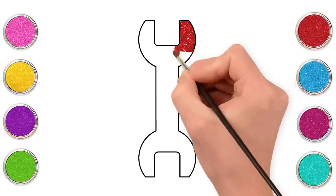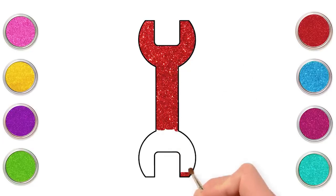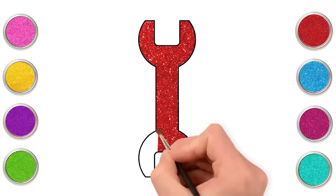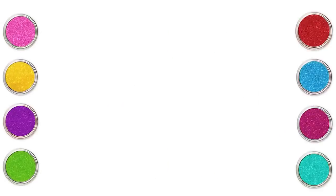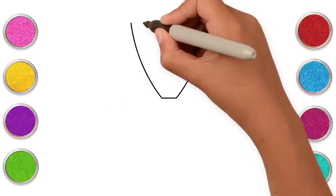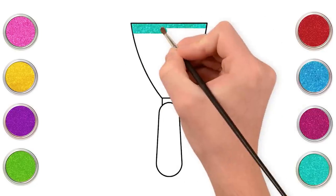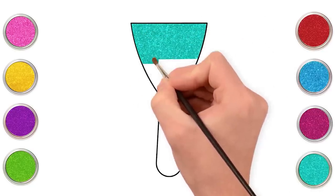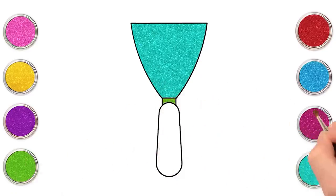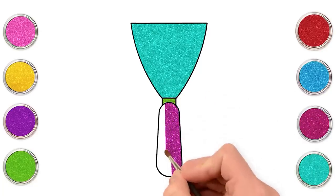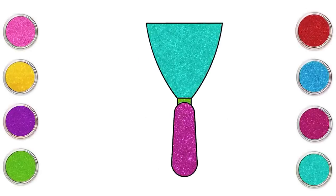Let's make a spanner and color it red. Last one to go. Let's make a shovel and color it teal, green, and magenta. And we are ready with our construction tools. Didn't you have fun?